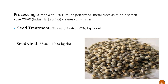Processing: grade with a 4/64 inch round perforated metal sieve as a middle screen. An OSAW industrial product cleaner-cum-grader is used for grading. Seed treatment: thiram or bavistin at the rate of 3 grams per kg of seed is recommended. The hybrid seed yield of pearl millet is 3500 to 4000 kg per hectare.